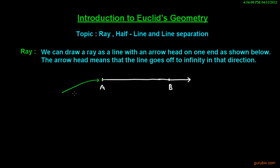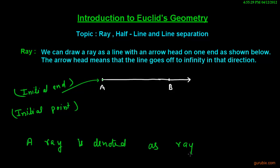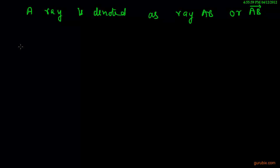This point is called initial end, or this end is called initial point. And a ray is denoted like this, a ray is denoted as ray AB or AB. Now let us learn something about opposite rays.